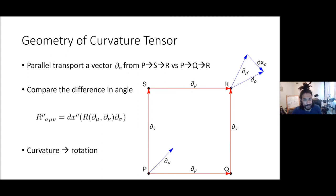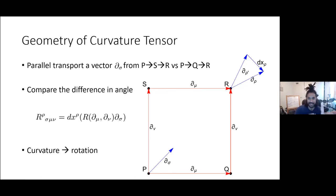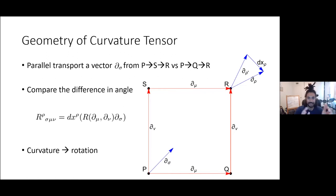I'll briefly go through what curvature and torsion are, since there's a nice geometric picture. In general relativity, you're worrying about transport of objects on some curved manifold, so it becomes difficult to think about how to move vectors around. If you had different fields — maybe an electromagnetic vector field — and you have some electron moving around on curved spacetime, you want to figure out how to transport everything properly. One thing commonly done is to look at transporting in loops.